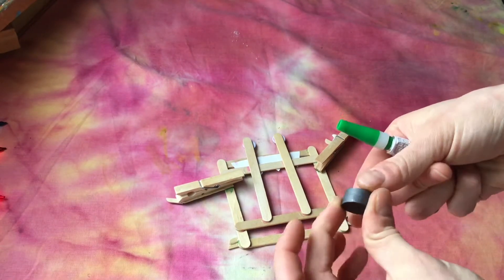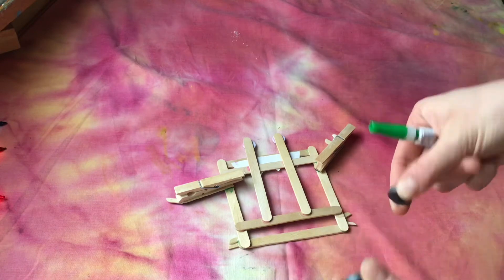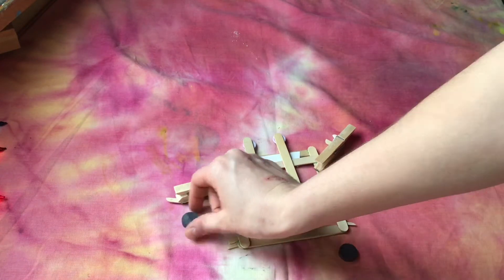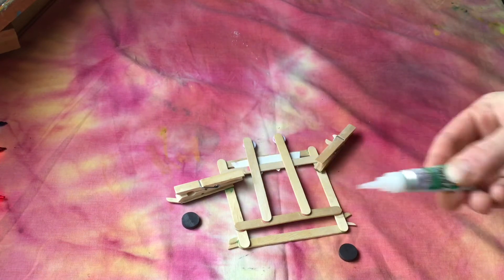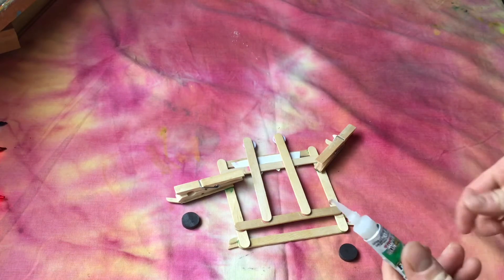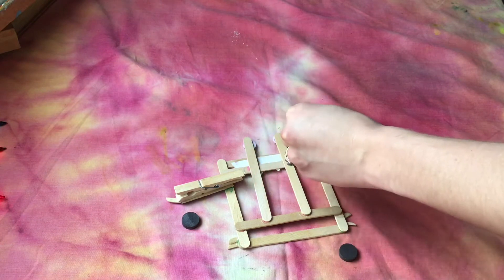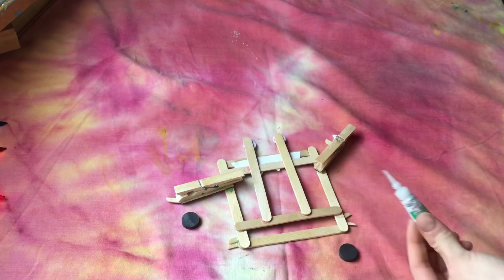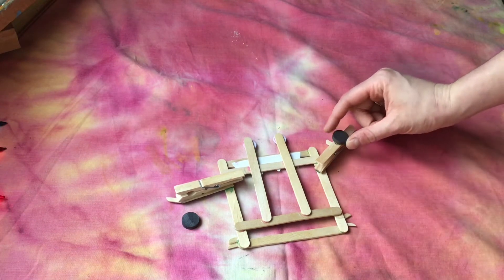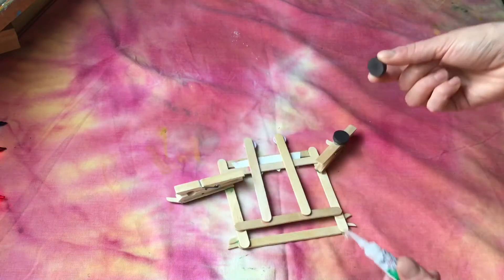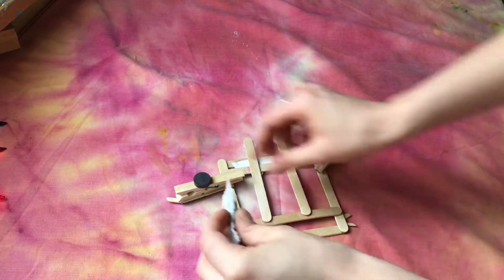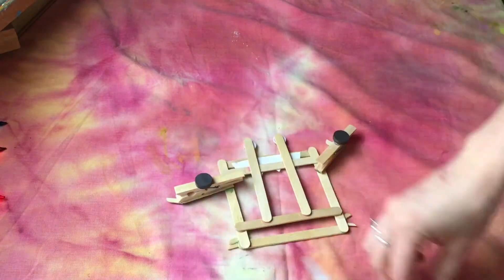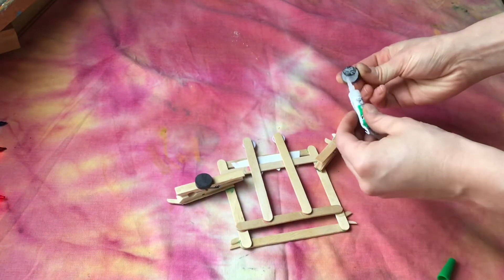I also considered for this project making just a popsicle stick stand that could prop my picture frame up. I could have glued another popsicle stick or two onto the back to make a stand like a picture frame that might stand on your table or nightstand, but I decided to go with magnets because I like magnets.